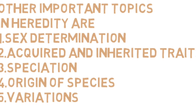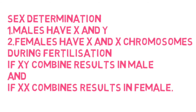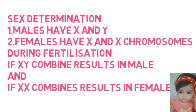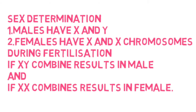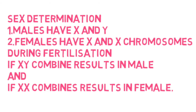Number one, we will discuss sex determination. The sex of a fetus is determined exclusively by males. Males have X and Y sex chromosomes, while females have X and X chromosomes. If male X and female X combine during fertilization, that results in a female fetus. If male Y and female X combine during fertilization, it results in a male fetus. So the chance of a male or female fetus is 50-50%. No one can predict the sex of a fetus.